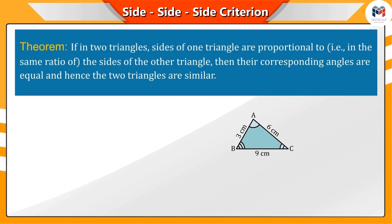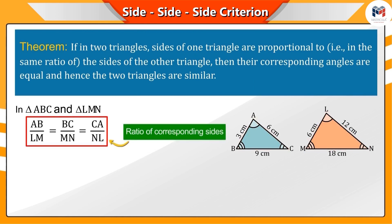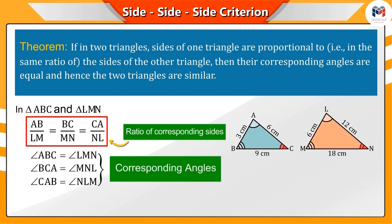Hence, we can say that in any two triangles, if the corresponding sides are in the same ratios, then their corresponding angles will always be equal. By which, we can say that they are similar triangles.